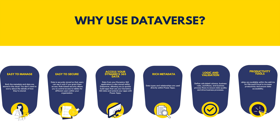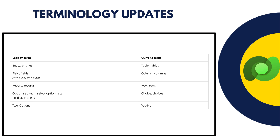Next we are going to discuss terminology updates. Responding to customer feedback and user research, effective from November 2020, Microsoft is updating some terminology in Dataverse to be more intuitive and make its use more productive. The terminology updates are listed on your screen and Microsoft is in the process of rolling them out across the Microsoft Power Platform. Note that these terminology updates are not applicable to any APIs or messages in the Dataverse web service — for example, the name of the message CreateEntityRequest and CreateAttributeRequest won't change.